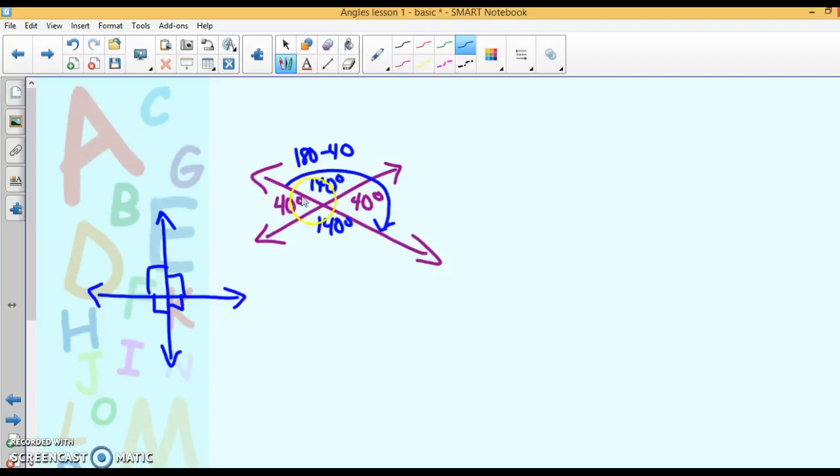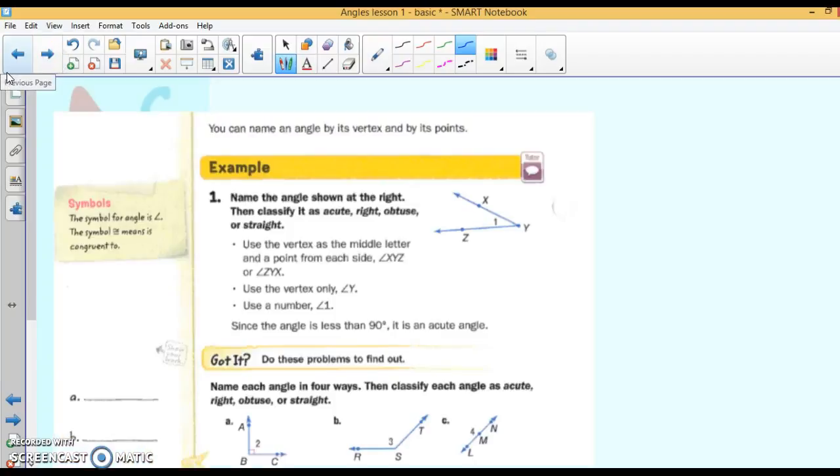Vertical angles are equal. A linear pair adds up to 180. They are supplementary. If it's a straight line, they add up to 180. And the whole way around is 360 degrees. All facts that you need to be able to know.